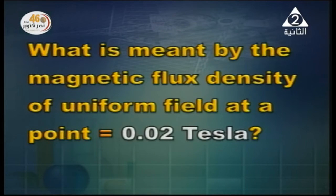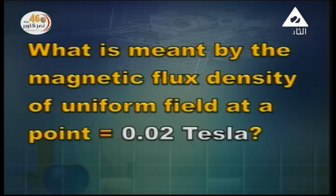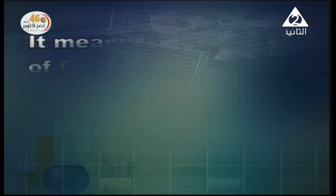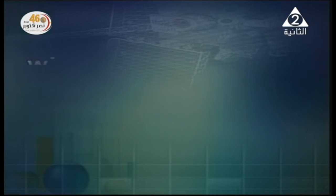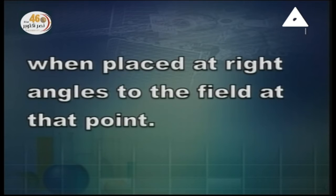We have a question: what is meant by the magnetic flux density of a uniform field at a point equaling 0.02 Tesla? It means a force of 0.02 newton would act on a wire 1 meter in length carrying a current of 1 ampere, when placed perpendicular to the field at that point.